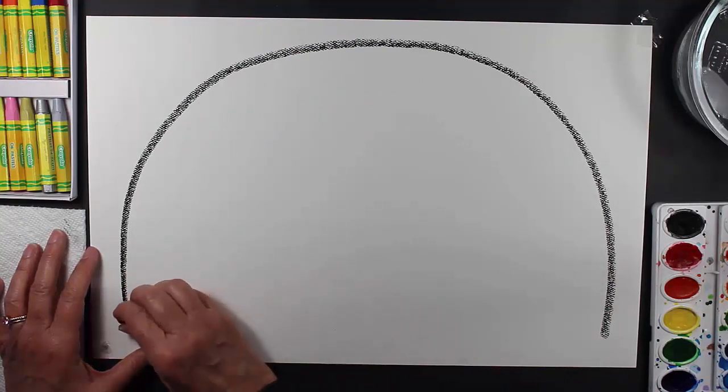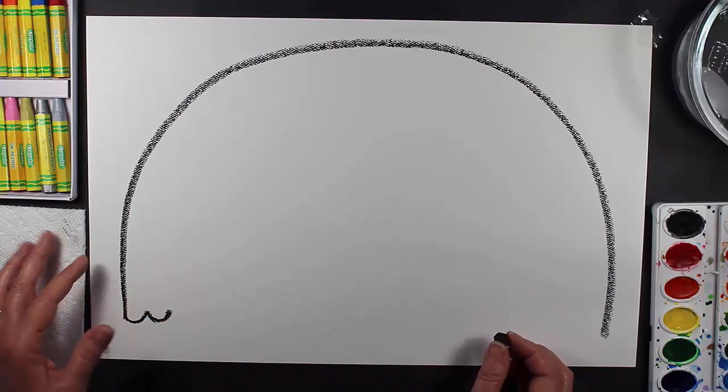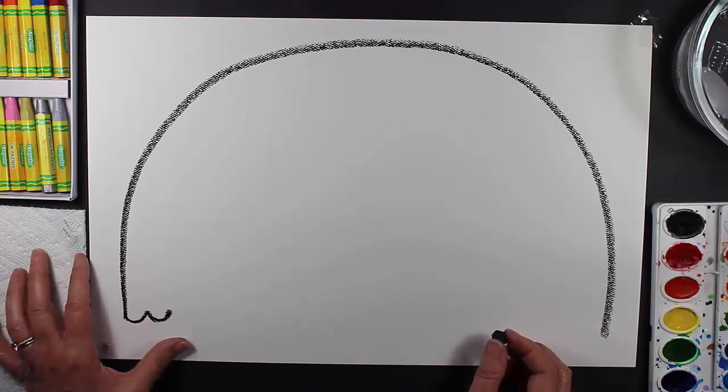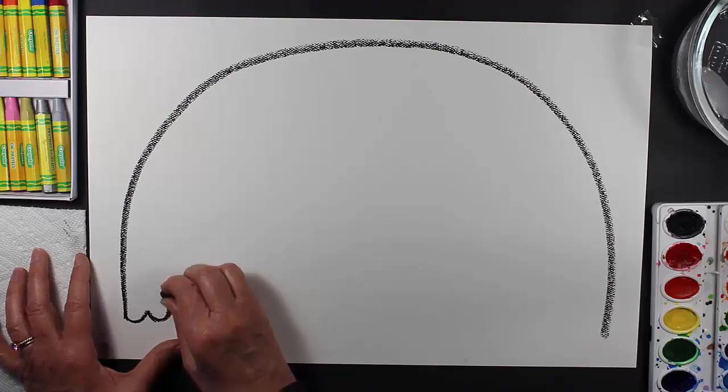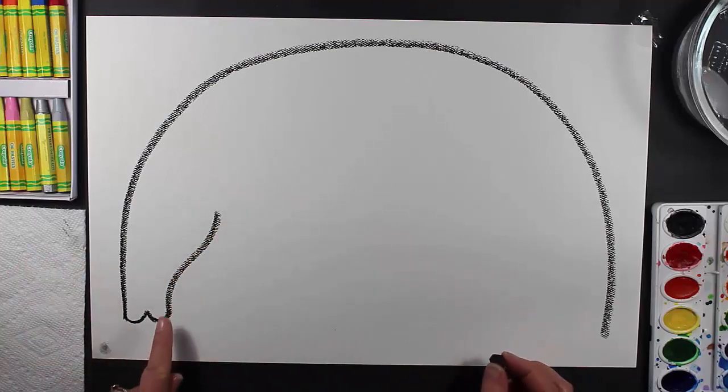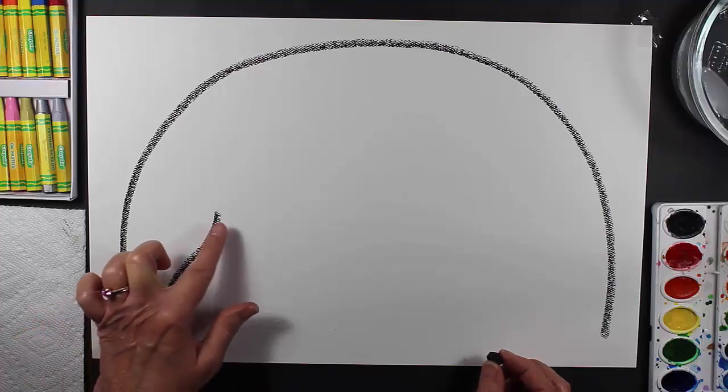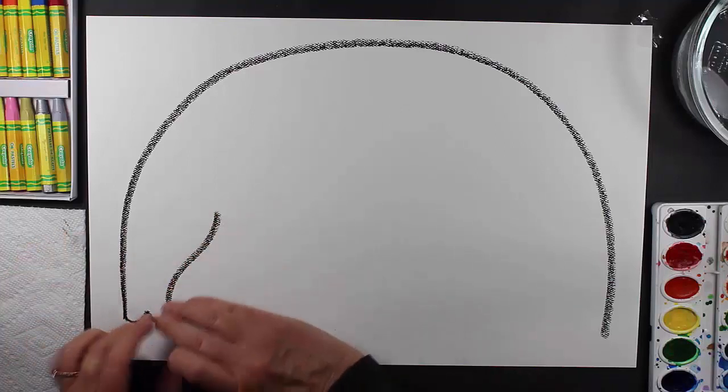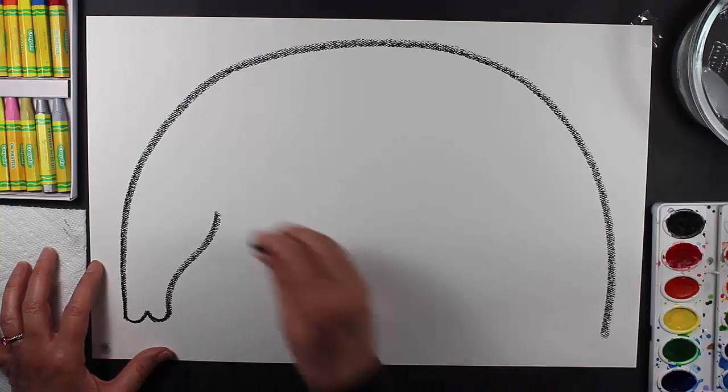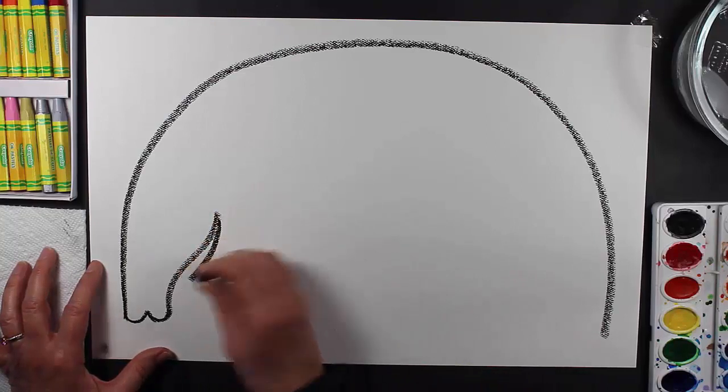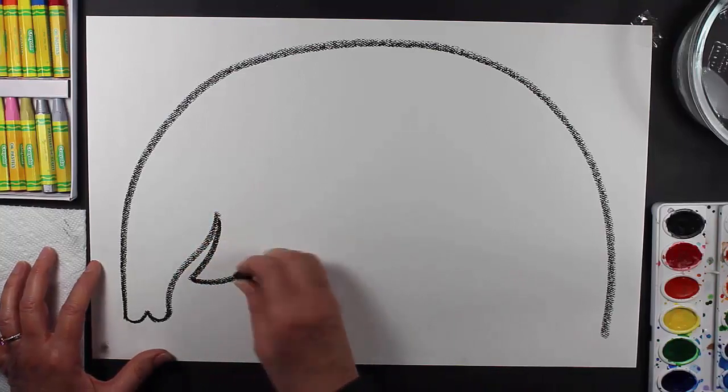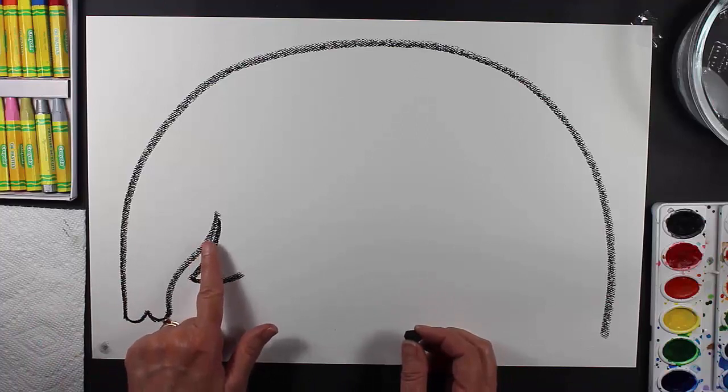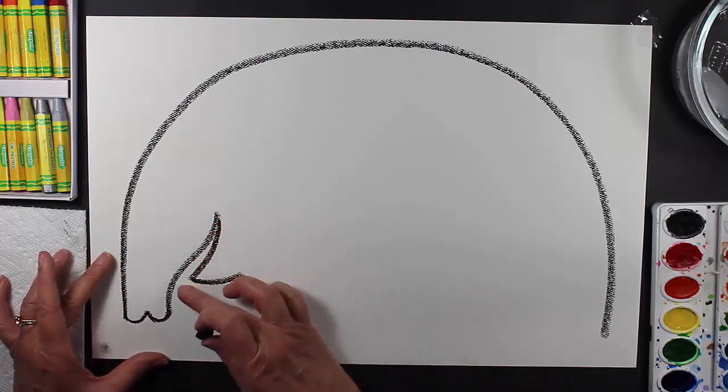Going back to the front, I make a little W just like this, and this is going to be the trunk of my elephant. Let's bring that up a little. It's like a backwards S that's elongated, meaning stretched out. Now I come down and then over, and that's going to be my elephant's mouth. This looks like a fancy letter L, doesn't it?